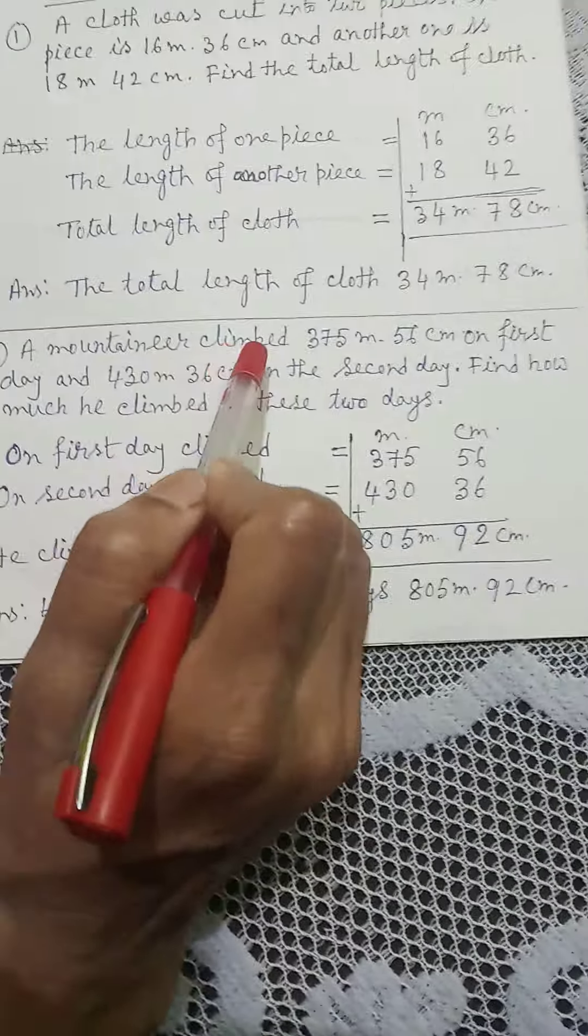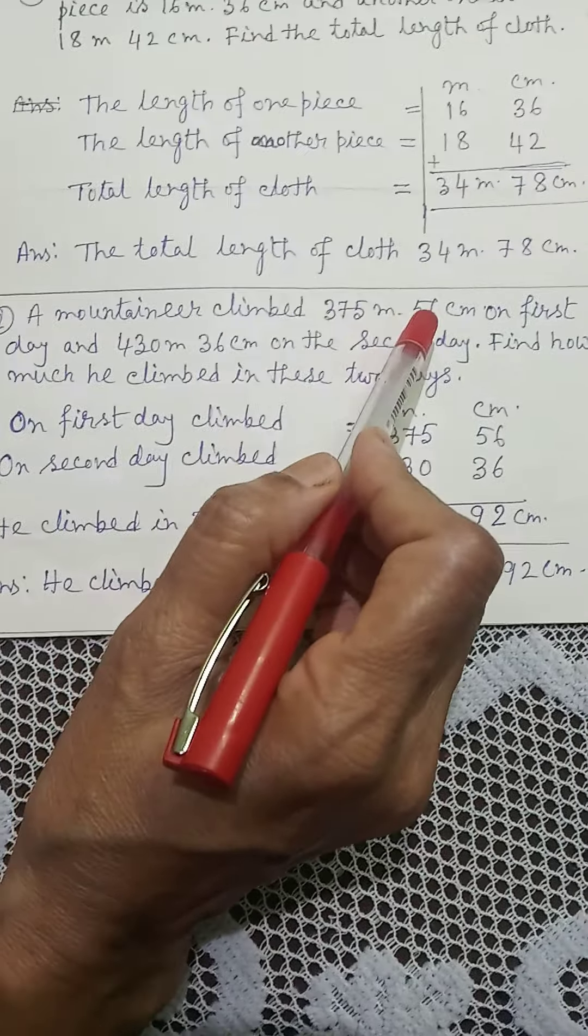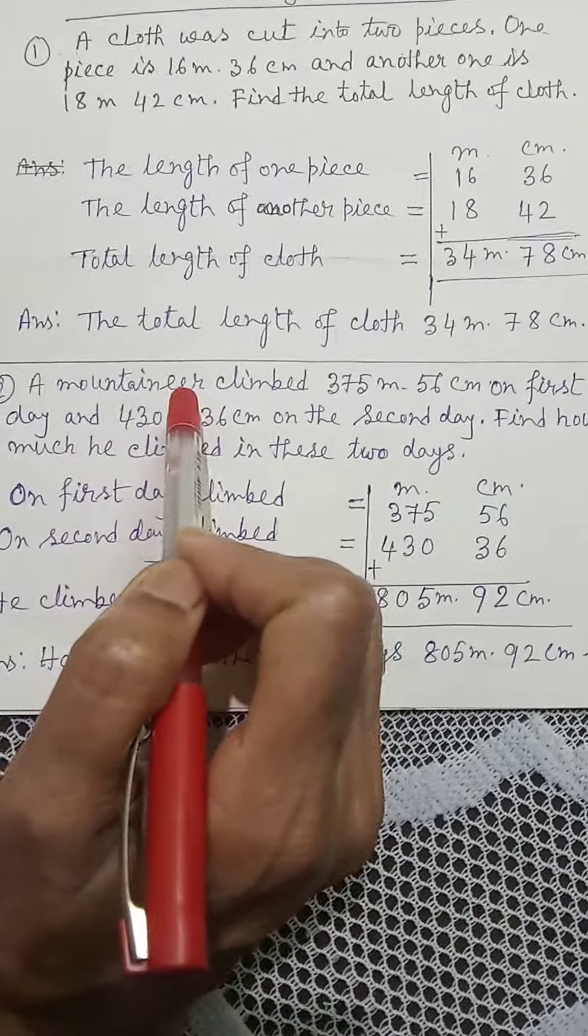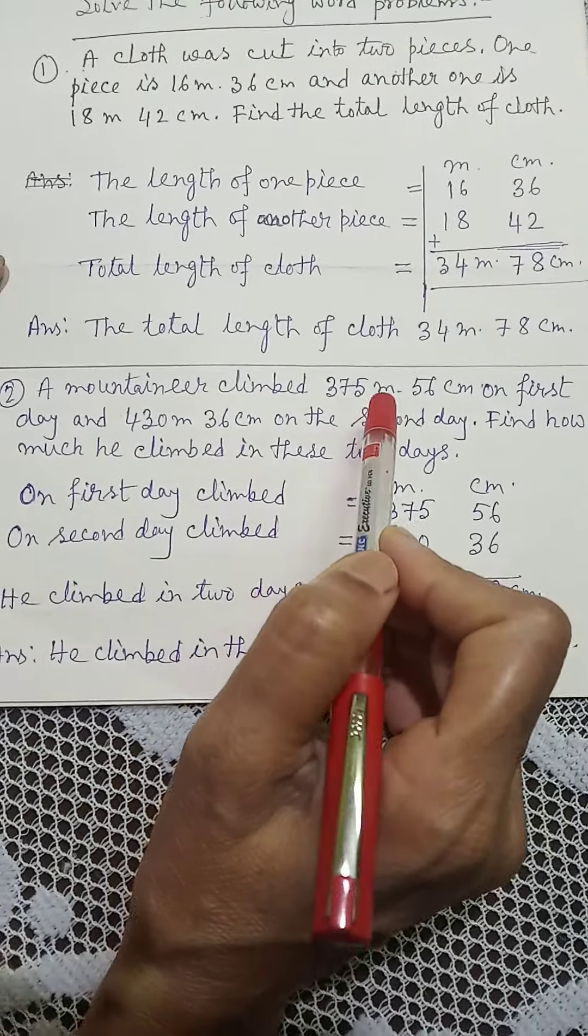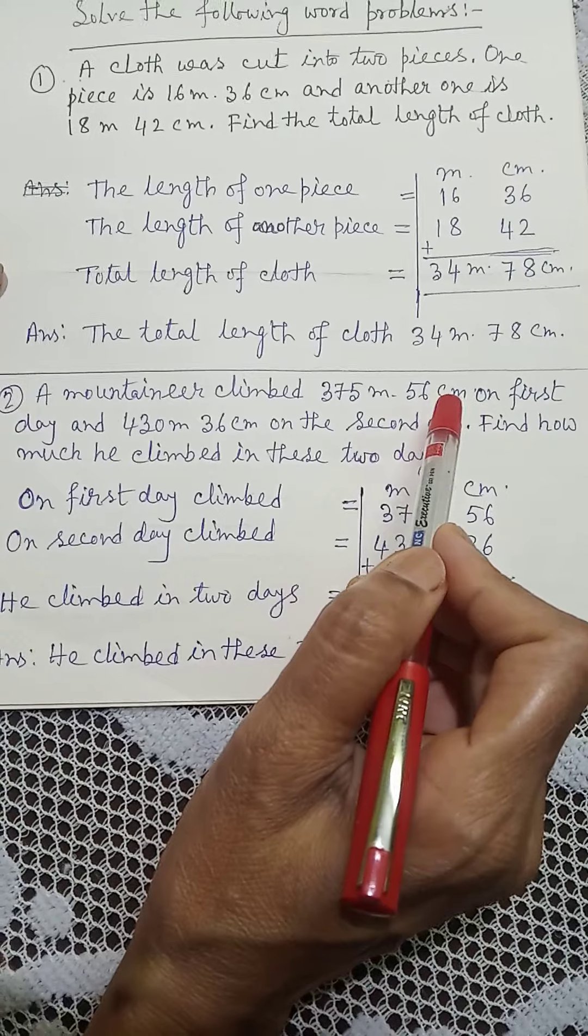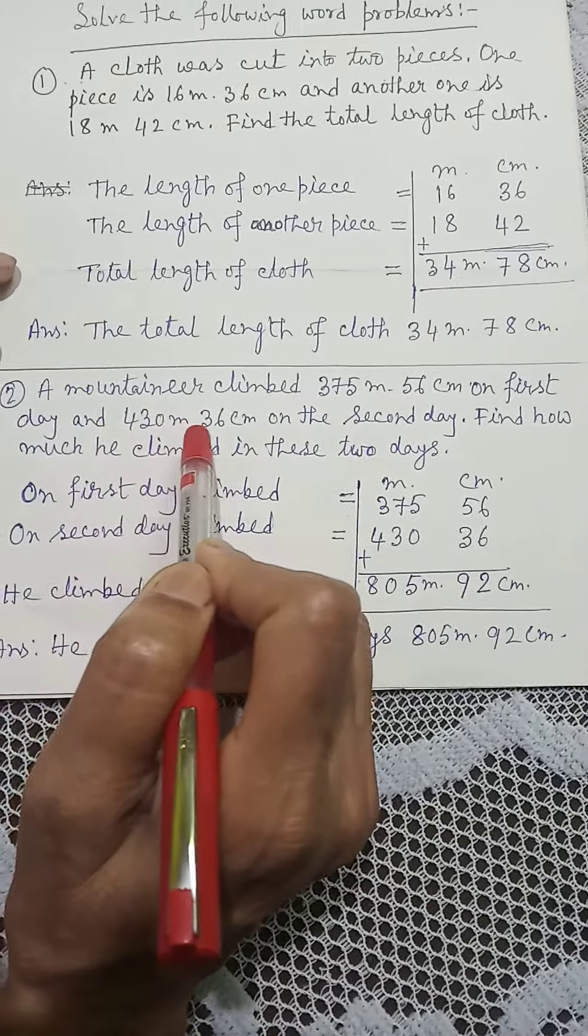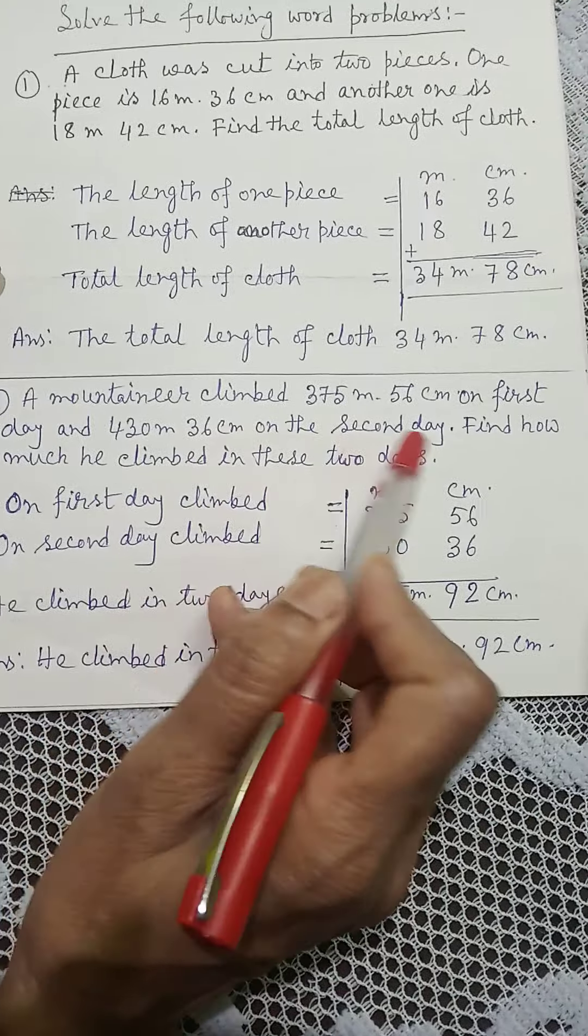A mountaineer climbed 375 m 56 cm on first day and 430 m 36 cm on the second day.